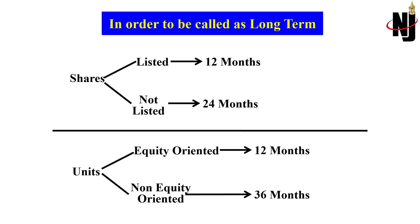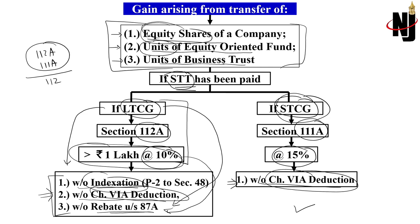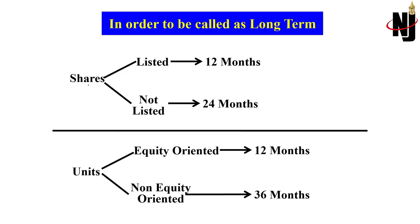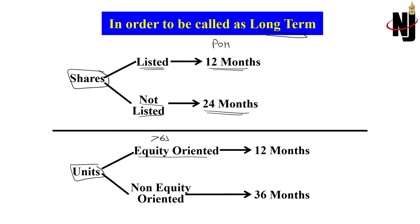Equity shares listed on a recognized stock exchange require a holding period exceeding 12 months to qualify as long-term; unlisted shares require exceeding 24 months. For units, listed or unlisted status makes no difference — what matters is whether they are equity-oriented. An equity-oriented fund invests more than 65% of available funds in listed company shares. Equity-oriented units require holding exceeding 12 months to be long-term; non-equity-oriented units require exceeding 36 months.